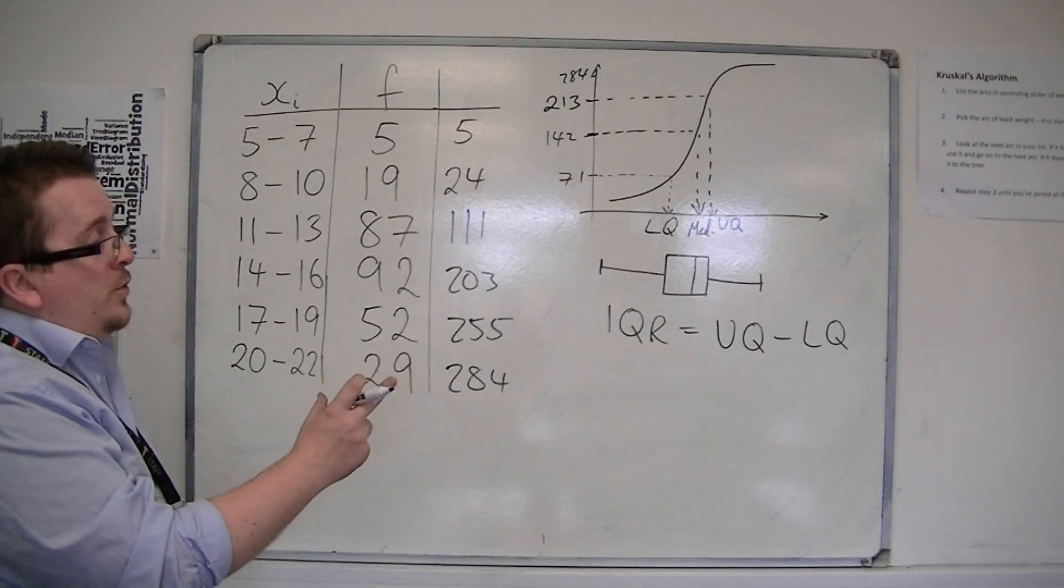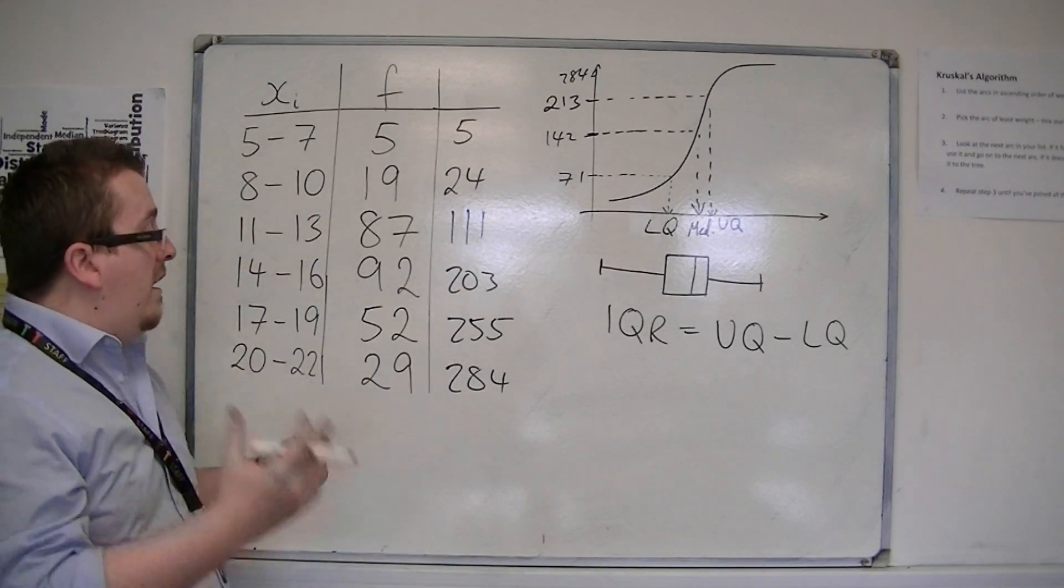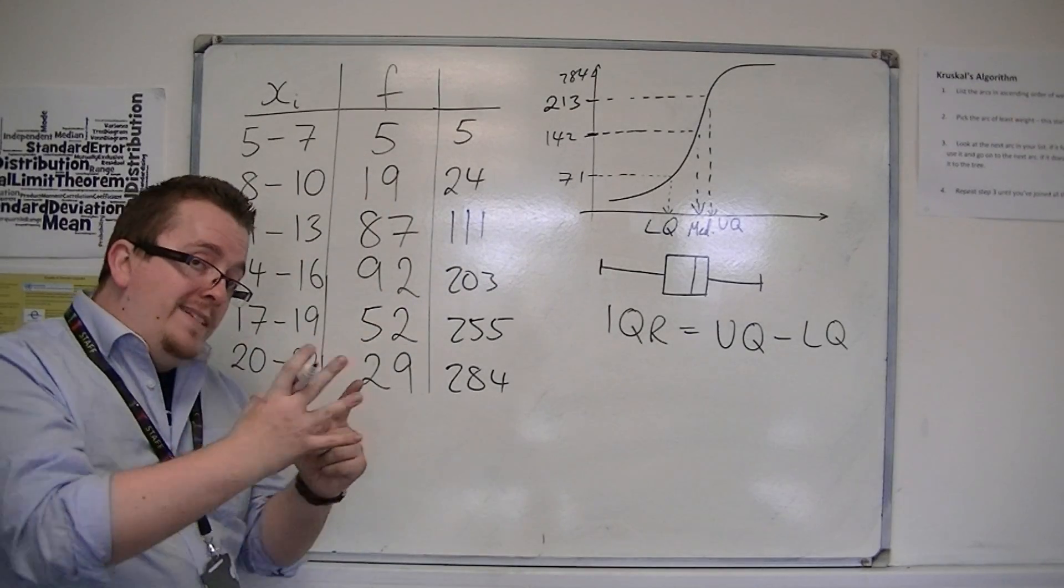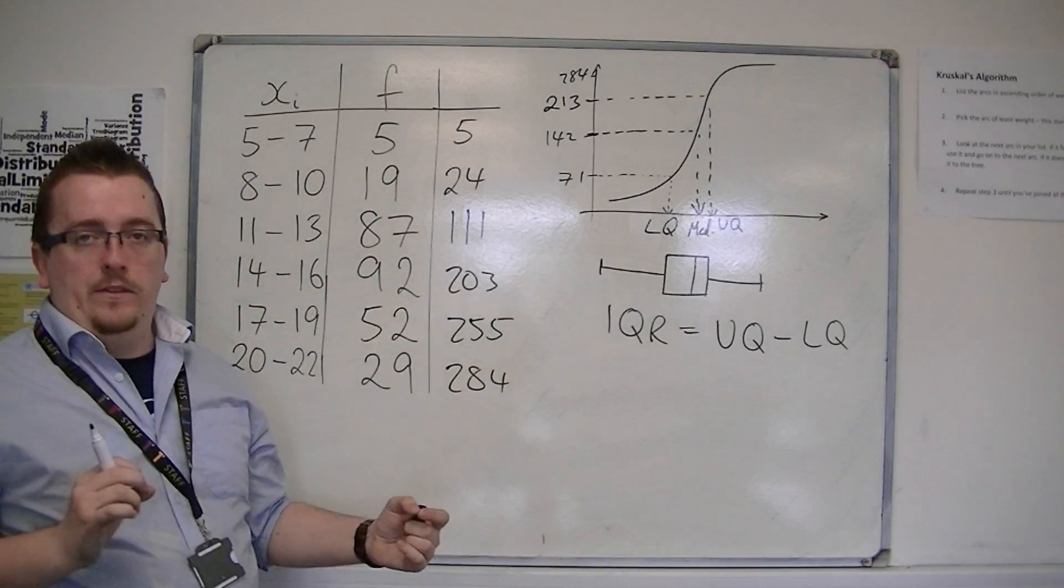And the good thing about the interquartile range, rather than just looking at the range, which was the largest number take away the smallest number, is because the interquartile range isn't affected by extreme values out at the very ends.